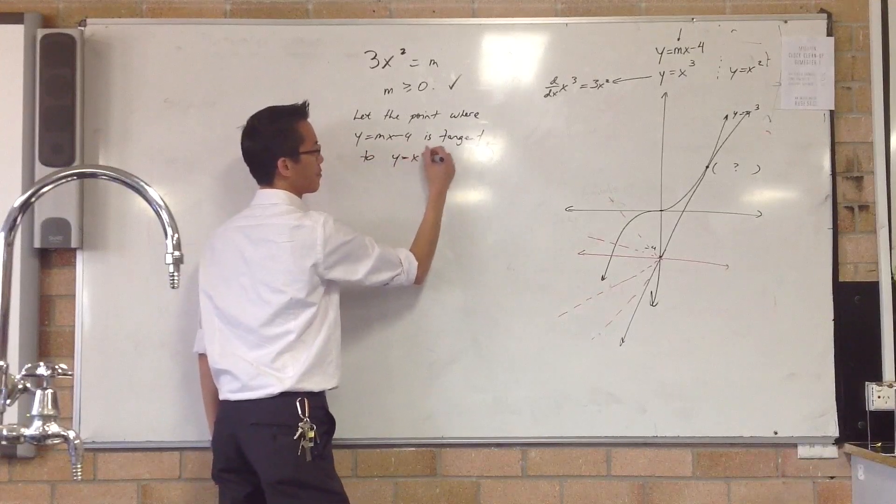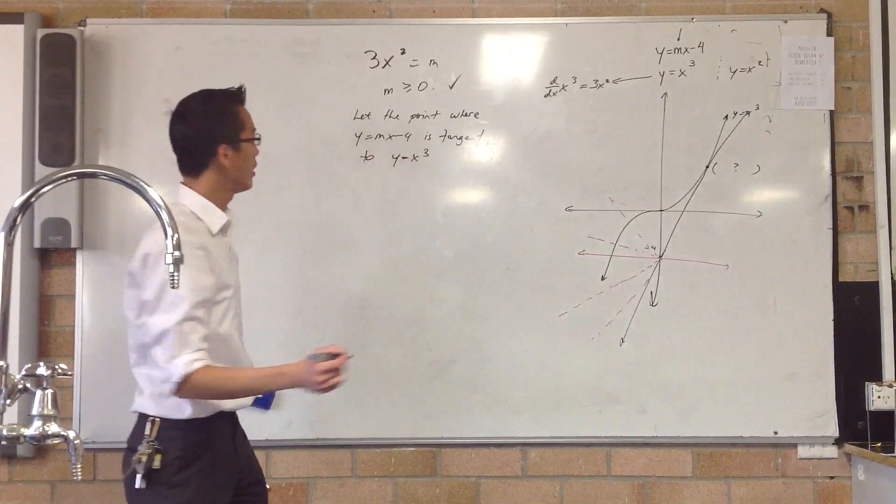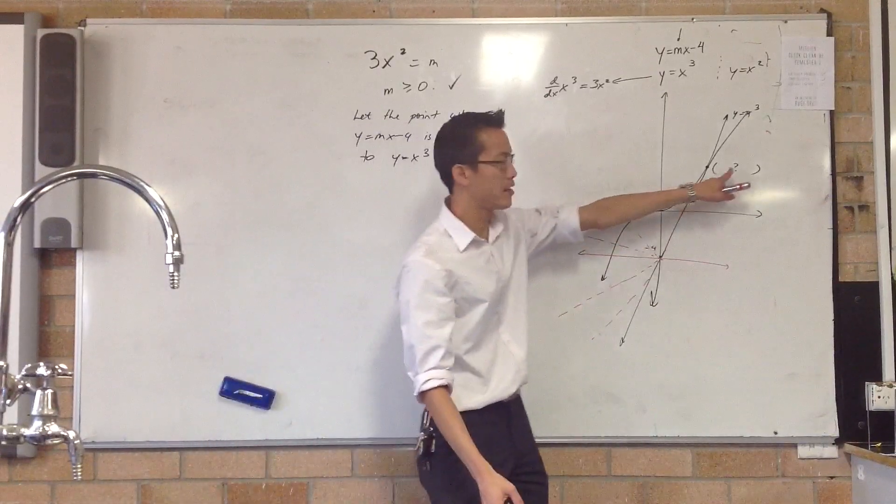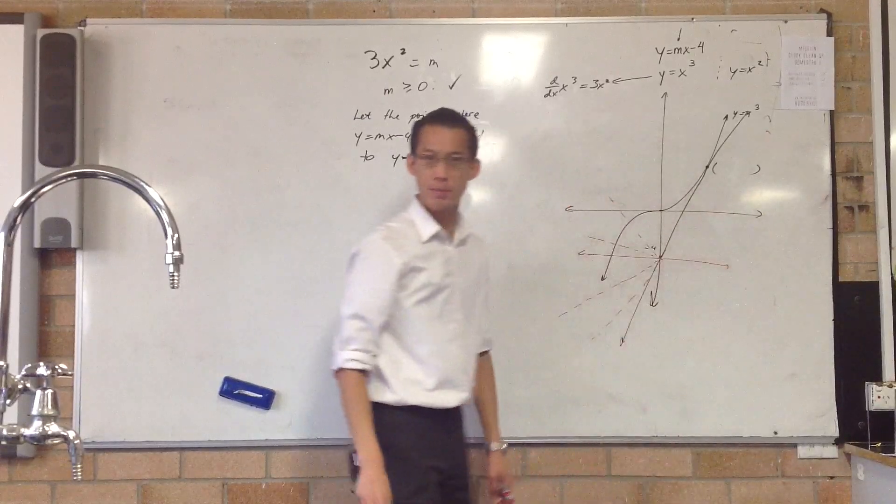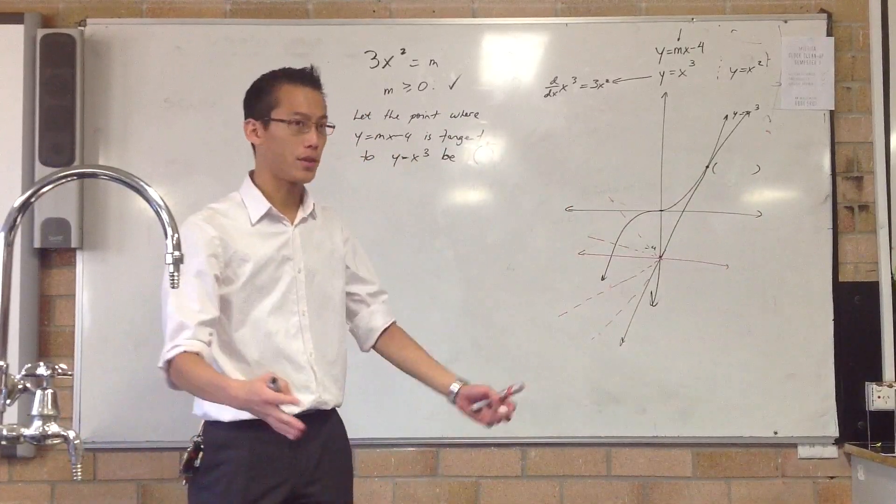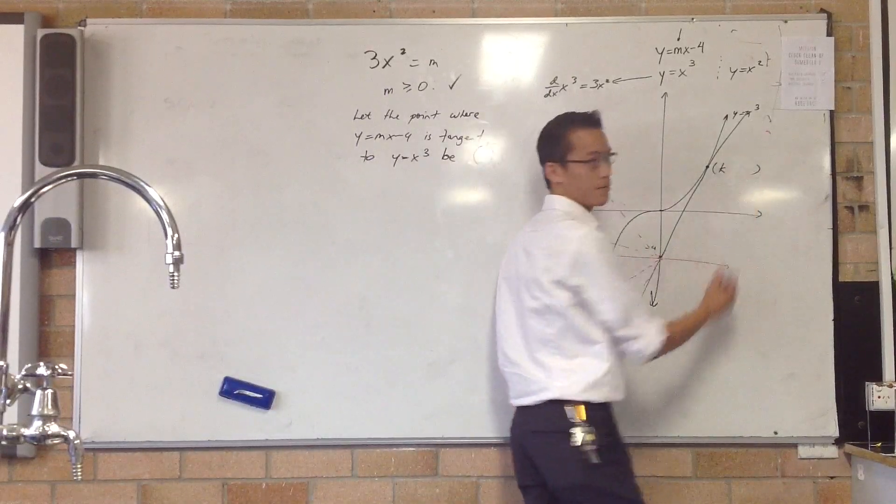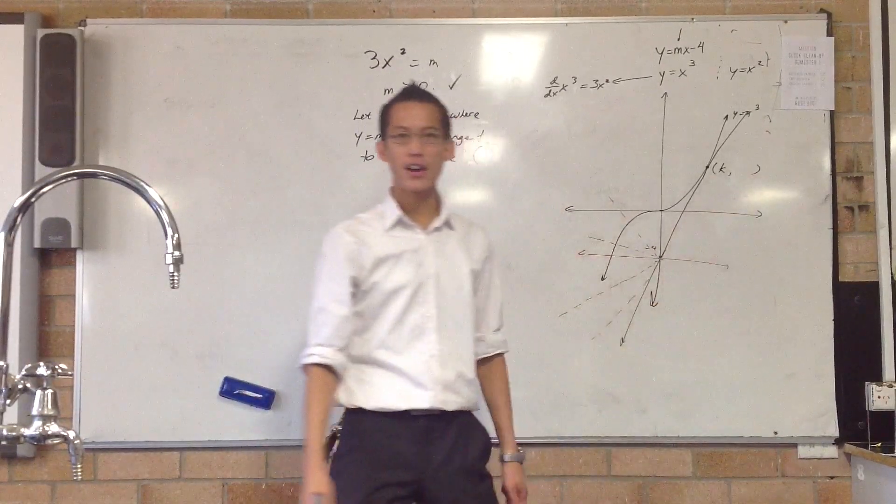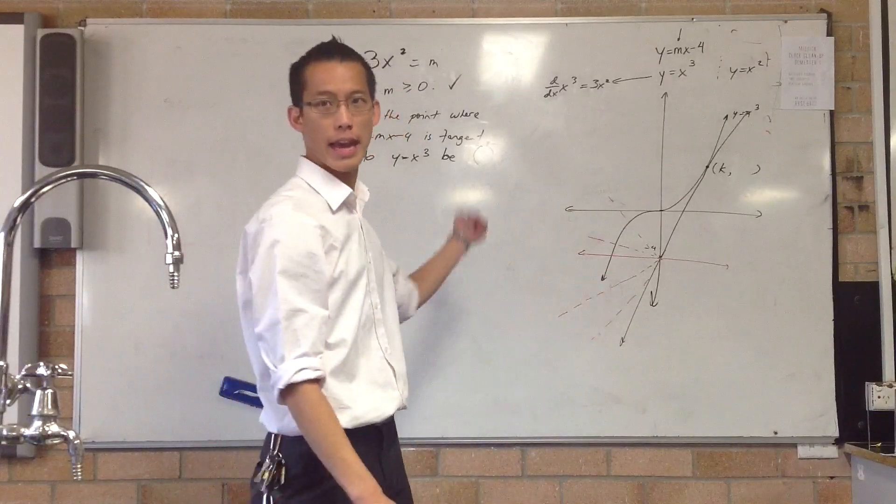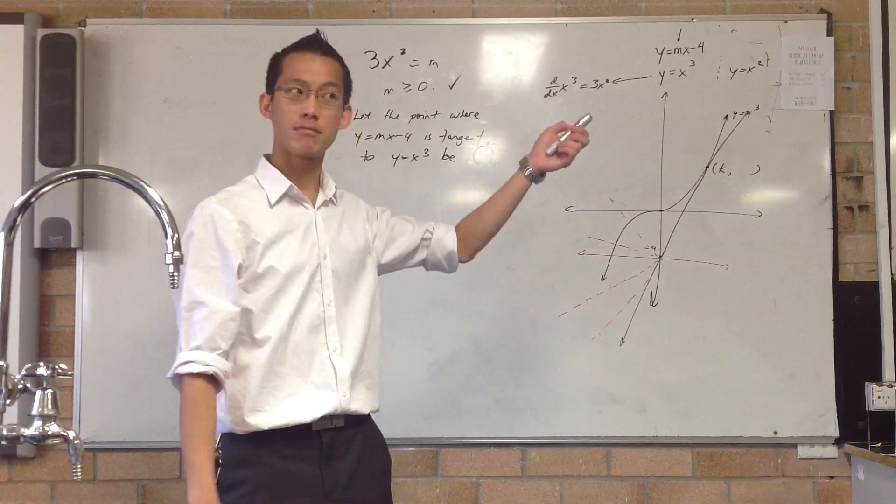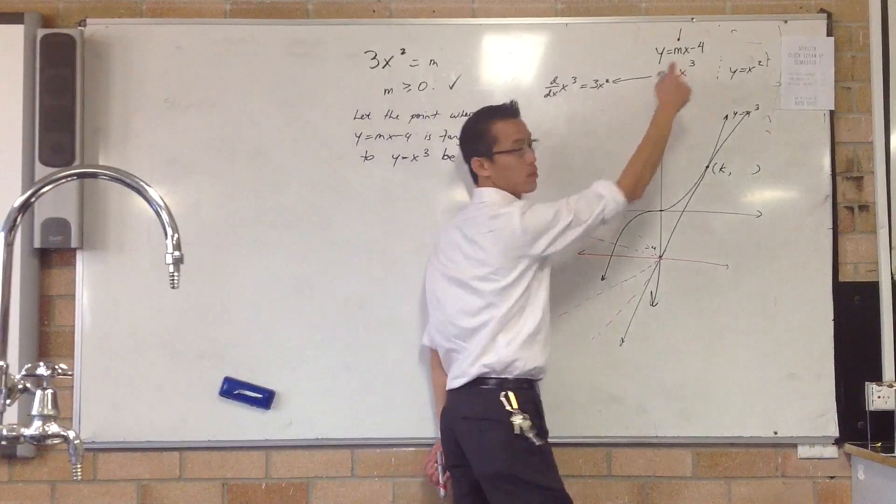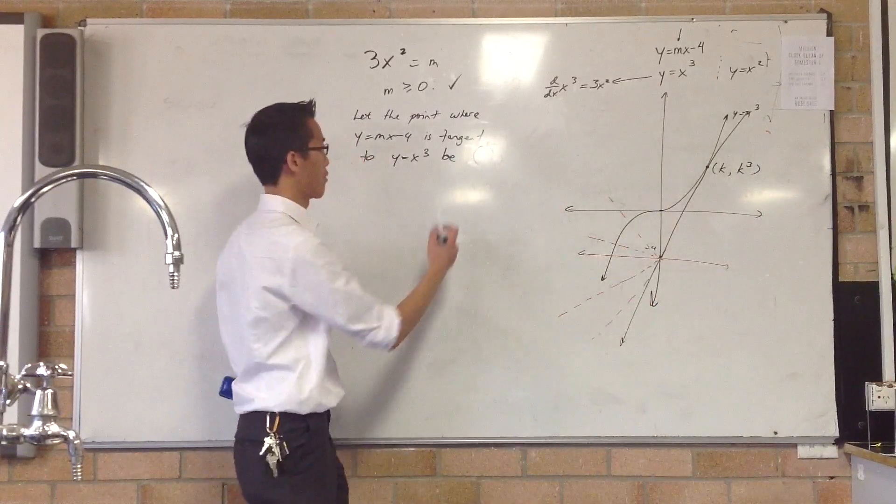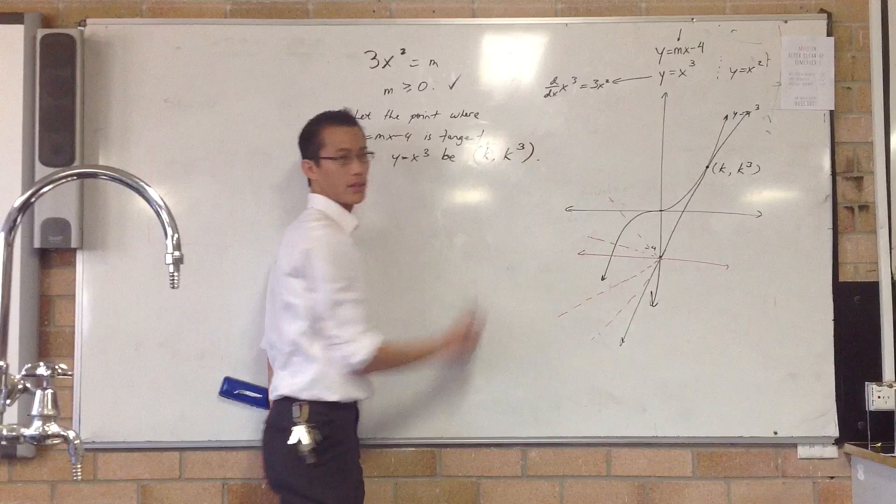I want to say, let the point where a line is tangent to the curve, let it be at a particular place. Now, I don't exactly know where it is, but that doesn't mean I know nothing about it. So, for instance, let's say its x value is k. I don't know what it is, alright? But if I know what the x value is, I'll know what the y value is too, won't I? If x value is k, then the y value will be k cubed, right? Because y equals x cubed. So, this is k, k cubed. That's an important point for us. That's what I'm going to call this point of intersection.